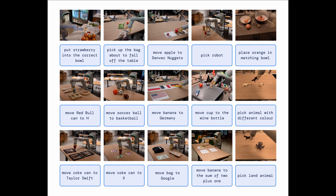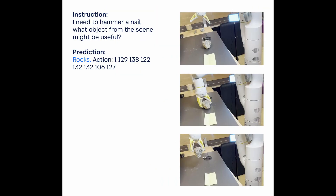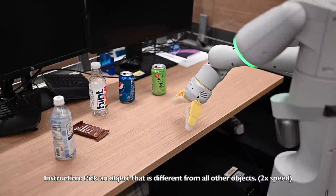Evaluating our model on the open-source language table suite of robotic tasks, we achieved a success rate of 90% in simulation, substantially improving over previous baselines including BCZ (72%), RT-1 (74%), and LAVA (77%). We then evaluated the same model in the real world — since it was trained on both simulation and real data — and demonstrated its ability to generalize to novel objects, where none of the objects except the blue cube were present in the training dataset.